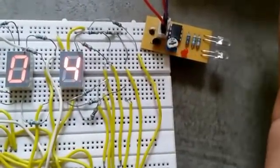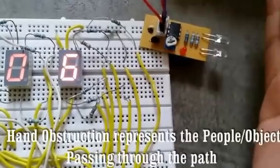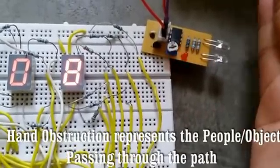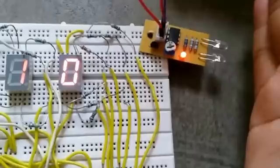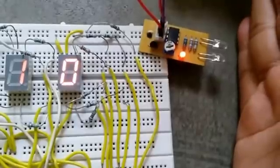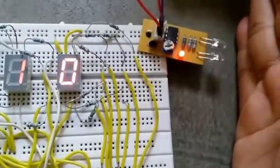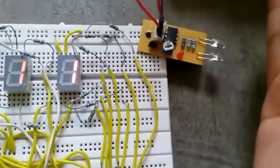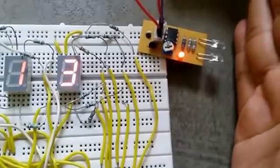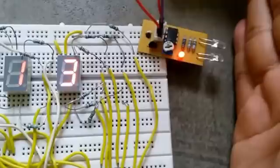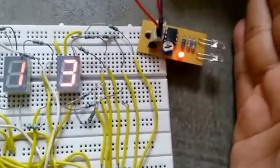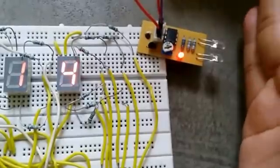With each obstruction, the count keeps on increasing. As you can see, this indicates that a people or object is obstructing the path of the IR beam, and therefore it keeps on incrementing. As you can see, now the people count or object count is at 13.